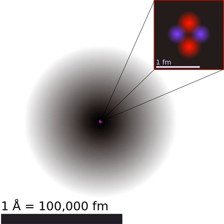Every element has one or more isotopes that have unstable nuclei that are subject to radioactive decay, causing the nucleus to emit particles or electromagnetic radiation. Radioactivity can occur when the radius of a nucleus is large compared with the radius of the strong force, which only acts over distances on the order of 1 femtometer.